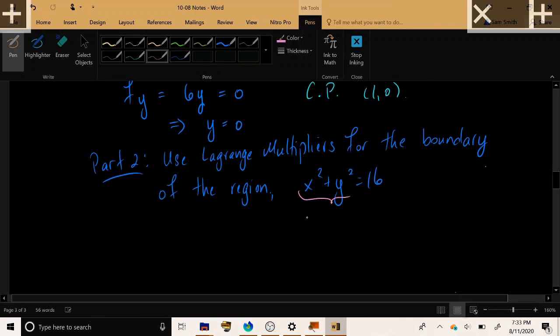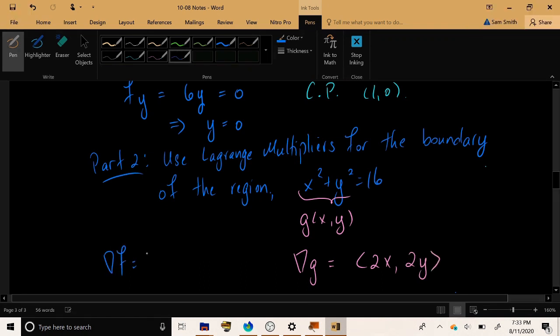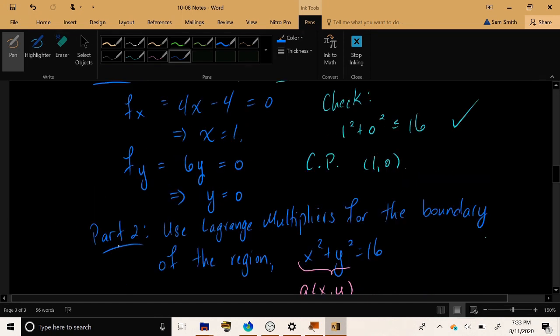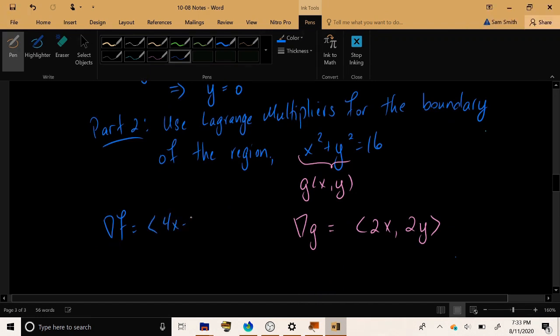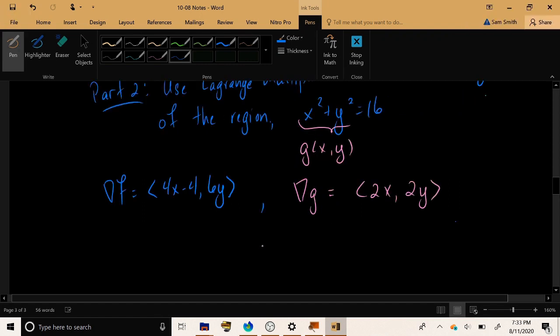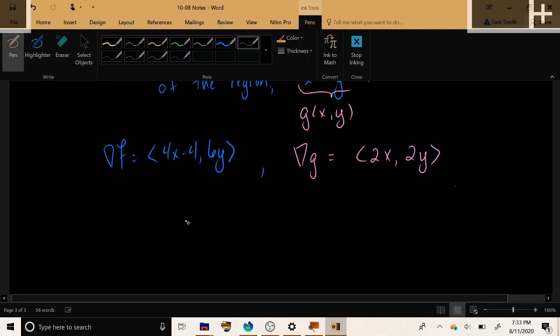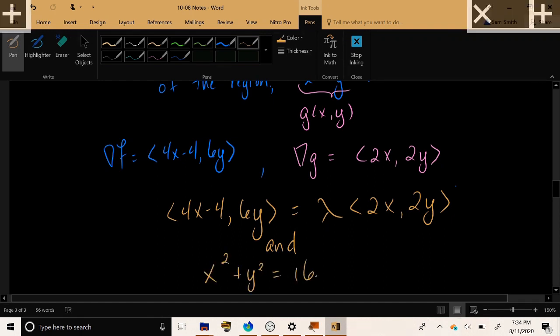So here is our constraint function g of x, y. The gradient of g of x, y is equal to 2x, 2y. And let's recall that the gradient of f we calculated above. We had 4x minus 4 in the x position and 6y in the y position. So let's set up our Lagrange multipliers equations, which says that, first of all, we need gradient of f to be equal to lambda gradient of g. And we also need, in fact, to make this more specific. And let's say we want 4x minus 4, 6y, to be equal to lambda, 2x, 2y. And we also require that the constraint equation is satisfied x squared plus y squared must be equal to 16.